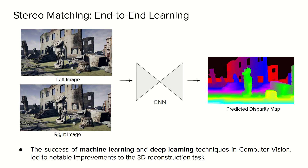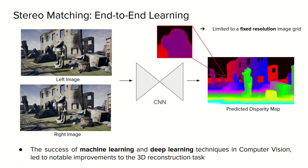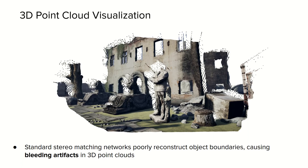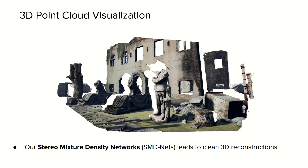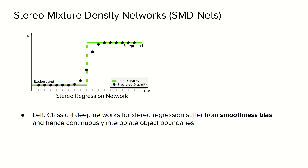However, while CNN-based methods have achieved large improvement in the disparity estimation task, they are limited to discrete predictions at pixel locations of a fixed resolution image grid and suffer from severe oversmoothing problems at edge boundaries. In fact, despite the estimated disparity map looking good, they often poorly reconstruct object boundaries, causing bleeding artifacts when converted to 3D point clouds. While classical deep networks for stereo regression suffer from smoothness bias and are not able to represent sharp disparity discontinuities, the proposed stereo mixture density networks effectively address this issue by predicting sharp boundaries and thus clean 3D reconstructions.